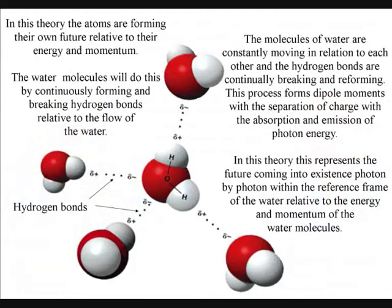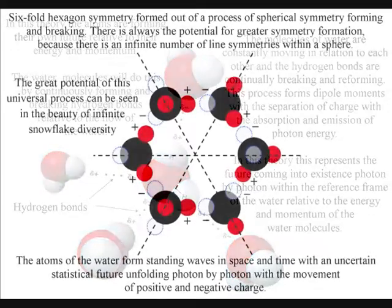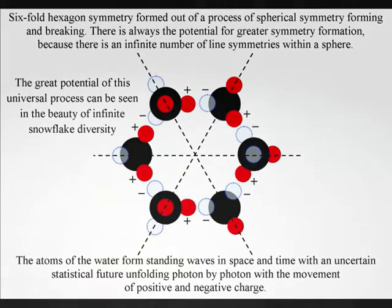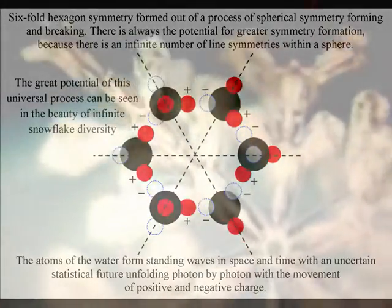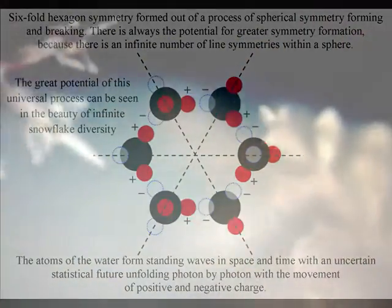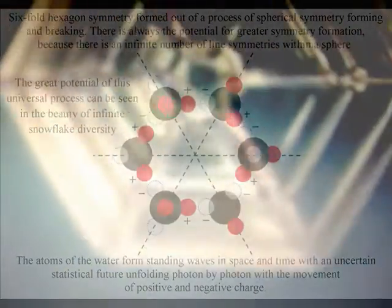In this theory, this represents the future unfolding photon by photon within the water. Just a change in environmental temperature can cause the atoms to bond together, with the process forming the uncertainty needed for infinite snowflake diversity.